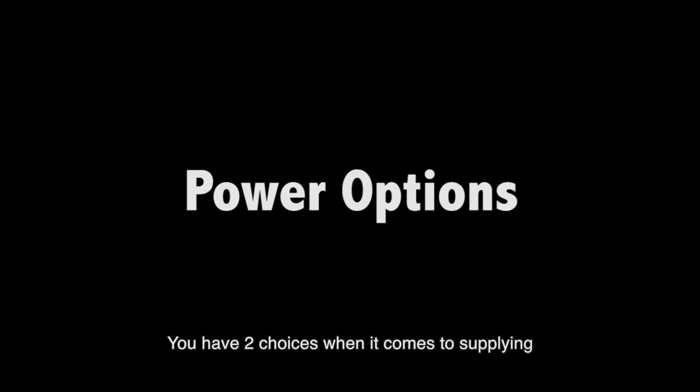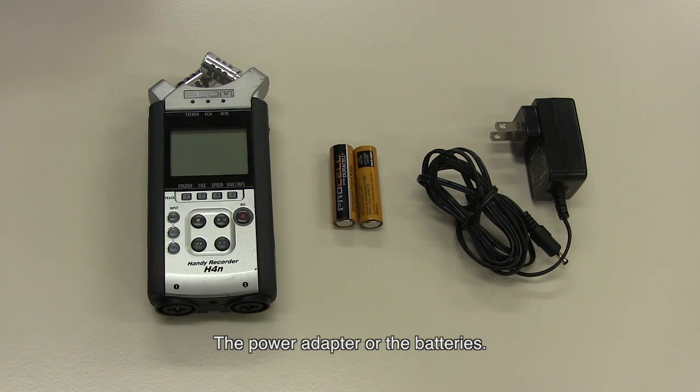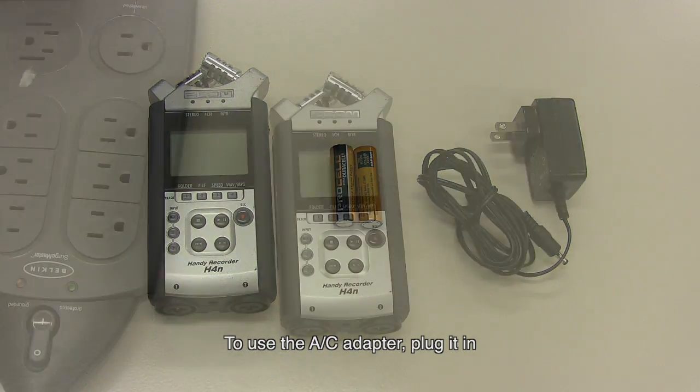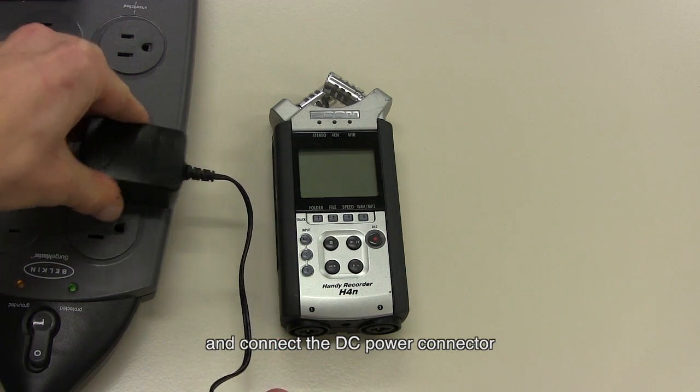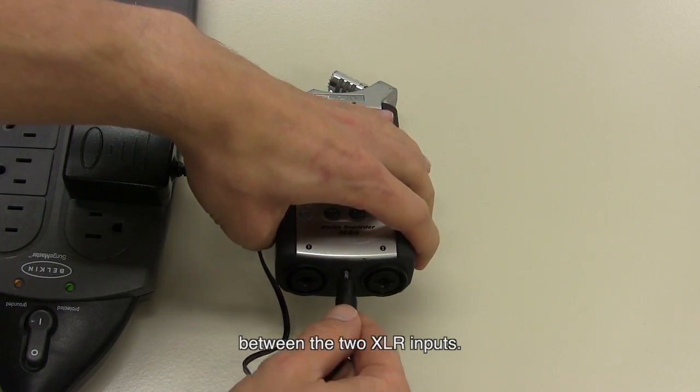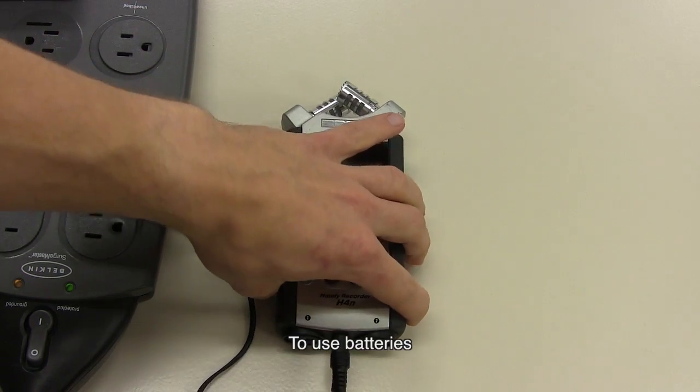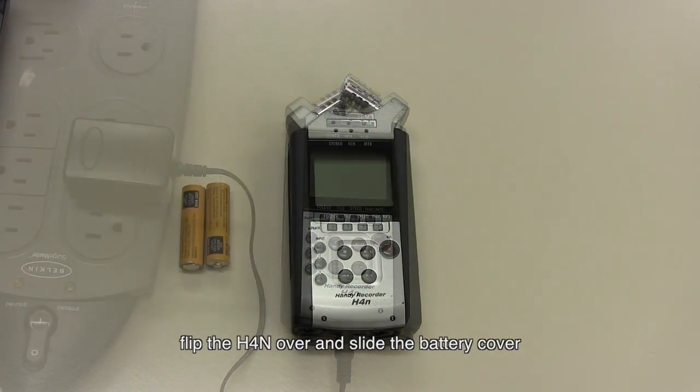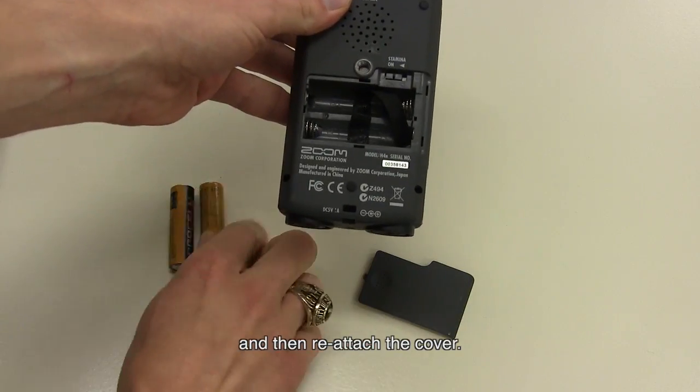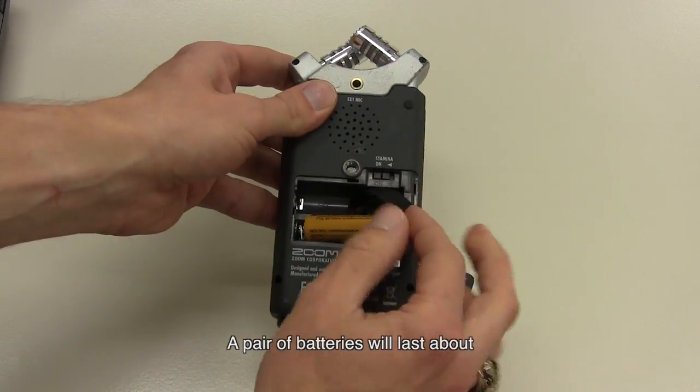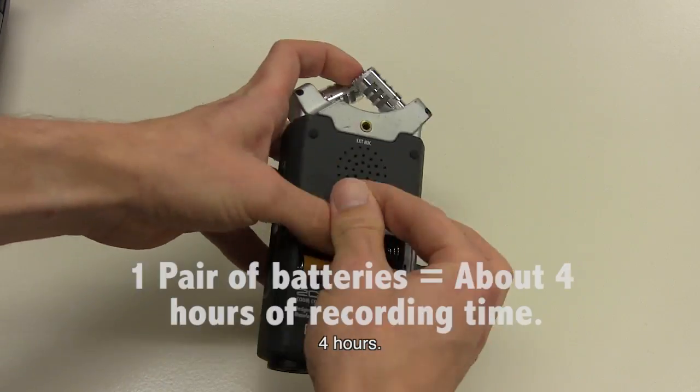You have two choices when it comes to supplying power to the H4n, the power adapter or the batteries. To use the AC adapter, plug it into any regular electrical socket and connect the DC power connector to the input located on the bottom between the two XLR inputs. To use batteries, flip the H4n over and slide the battery cover off to insert your two AA batteries and then reattach the cover. A pair of batteries will last about four hours.